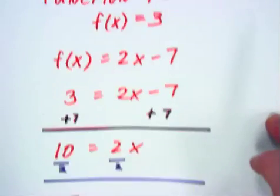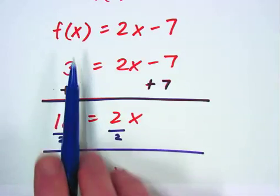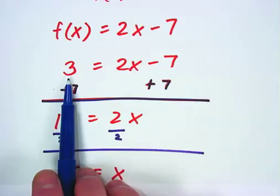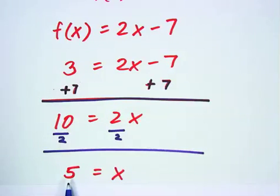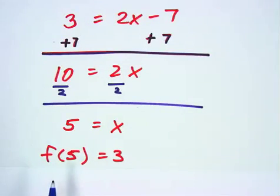So what that means is that when this function has an output of 3, you have to put in the input of 5. So the conclusion would then be f of 5 equals 3.